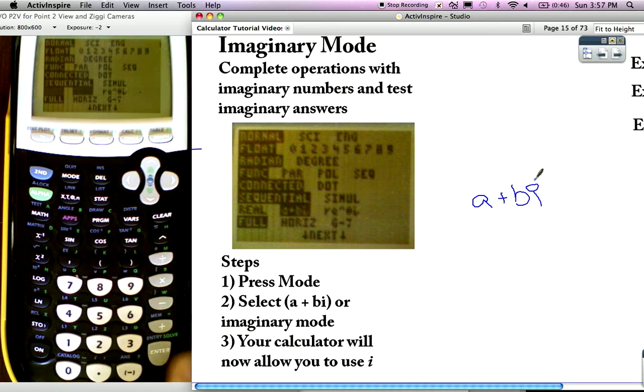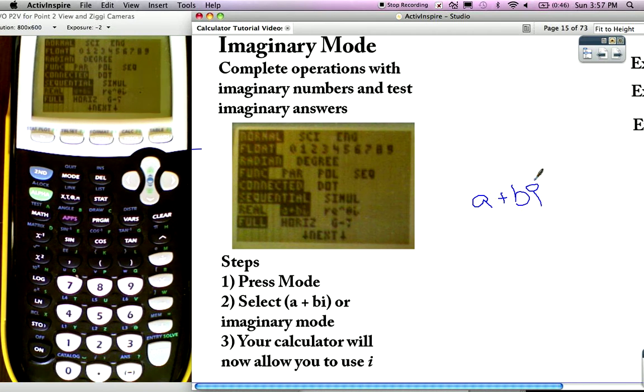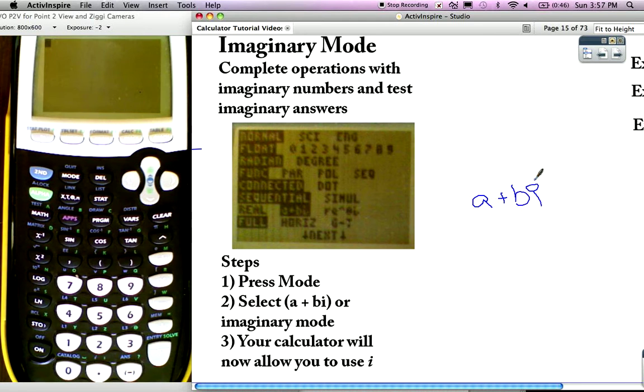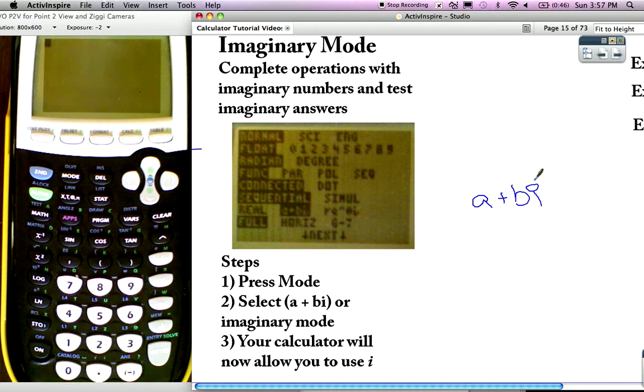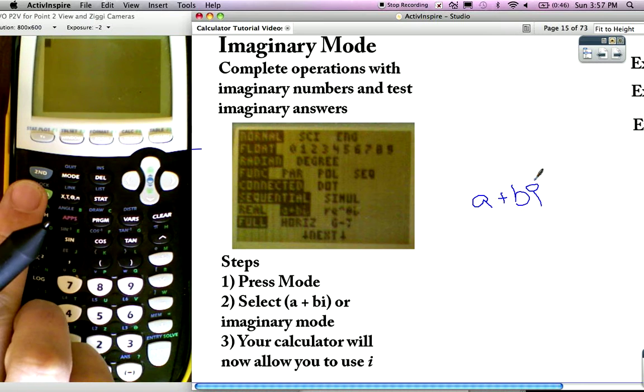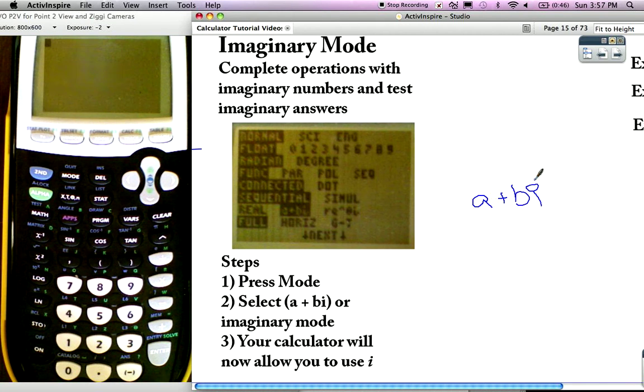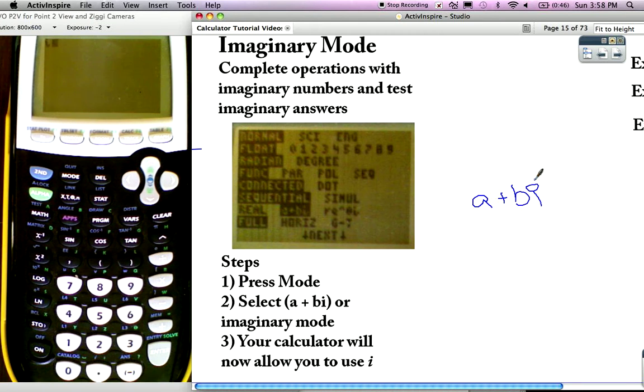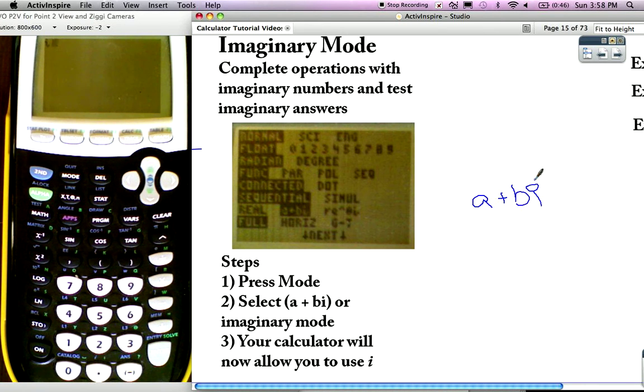All right, so I hit enter and now I am in imaginary mode. Now what that allows me to do is I can use the i button, which you may never have noticed is located right there at the bottom. So if I hit second decimal point, see how it comes up i? And when I hit enter, that means I have i.